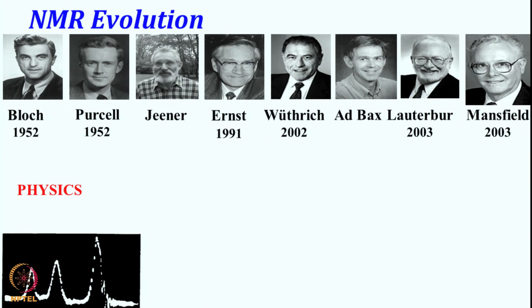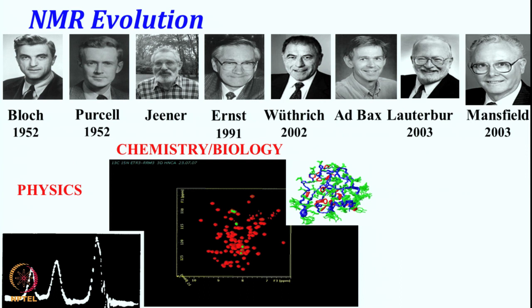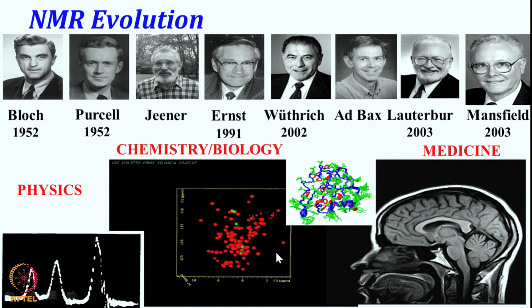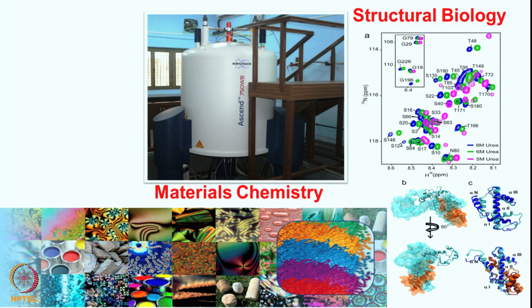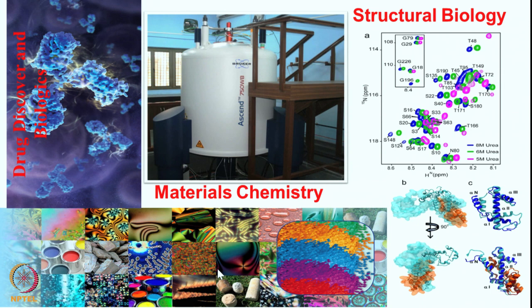In physics it was mostly looking at the absorption line and the nuclear properties of various spins. Then in chemistry, various two-dimensional and three-dimensional spectra were recorded to get the structure of molecules. In medicine, it is the brain image that is recorded, and that encompasses NMR all the way from physics to medicine. NMR can be used in structural biology to look at the structure and dynamics of macromolecules, in a variety of materials, and in biologics and drug discovery. Therefore, in today's research world NMR is one of the prominent tools in all fields of science.